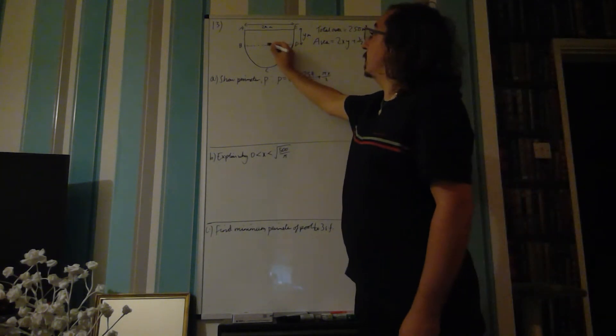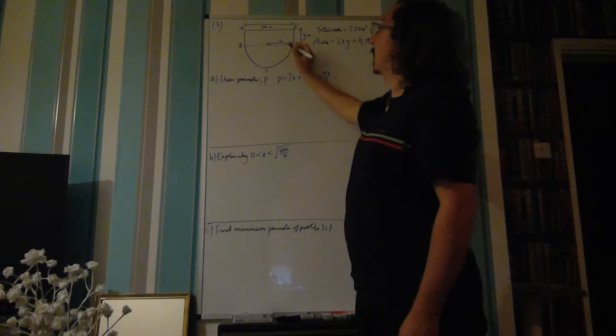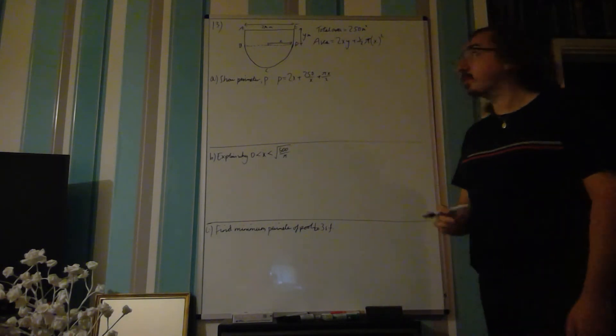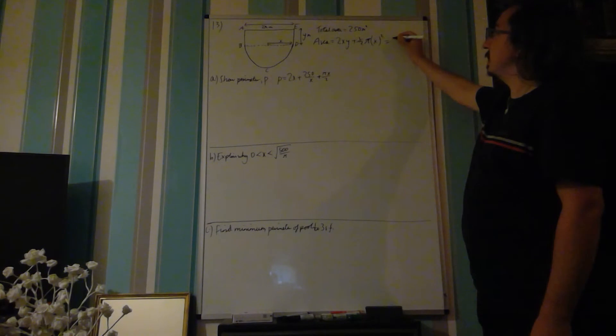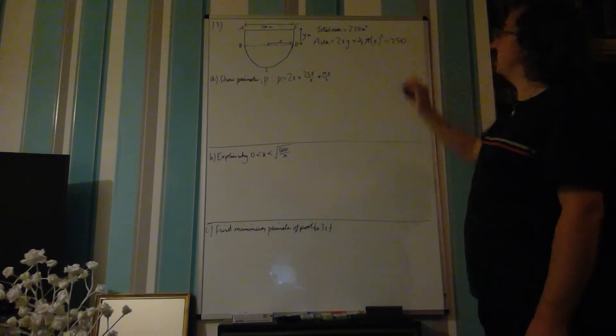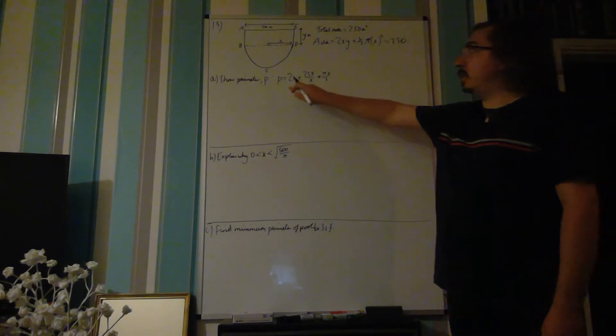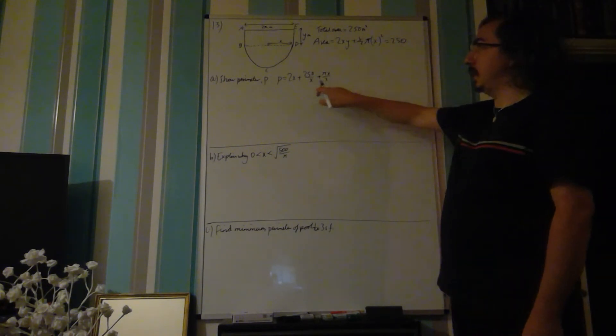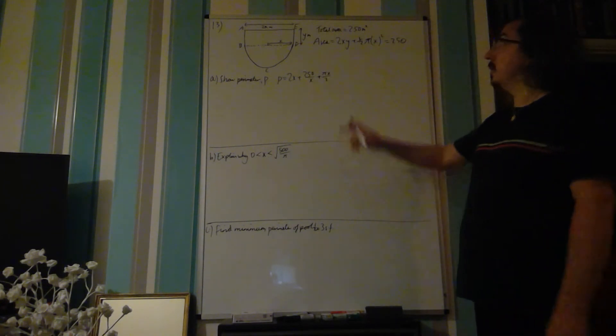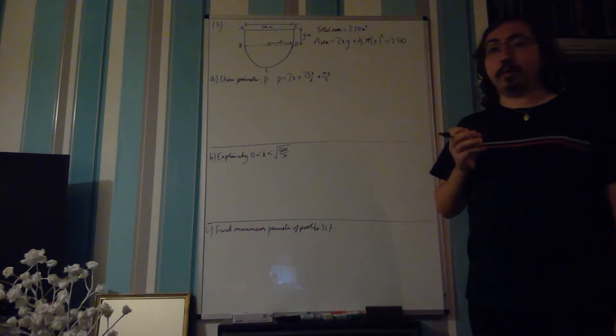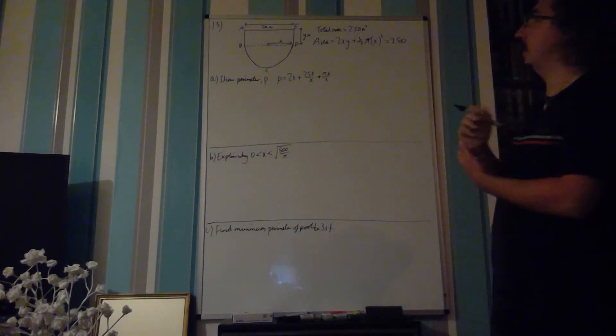We can add that to our diagram. Our radius there is equal to x. And we know that that is equal to 250. Now, if we look at our perimeter formula, we can see here that we've got no y. So actually, we want to rearrange this to make y the subject, so we can get rid of it a little later.